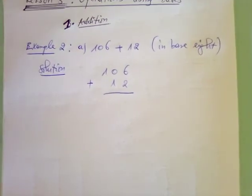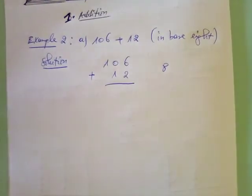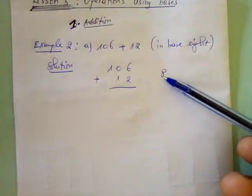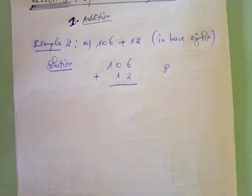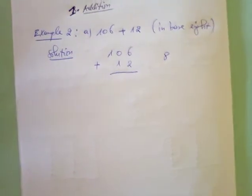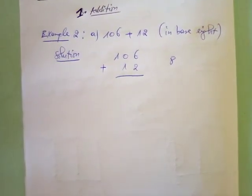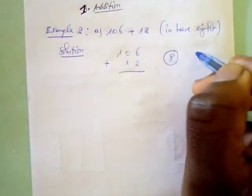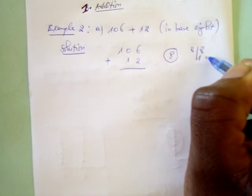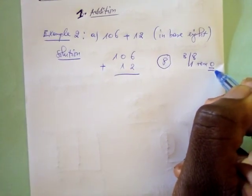We add the ones column: six plus two equals eight. We are in base eight, so we cannot write eight as it is. We have to divide eight by eight — eight divided by eight gives one, and the remainder is zero. The remainder is what we write in the ones place.